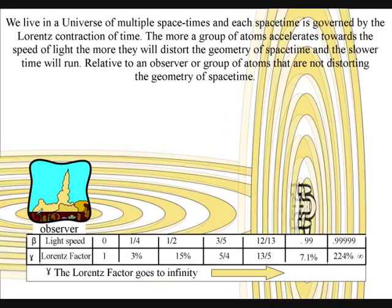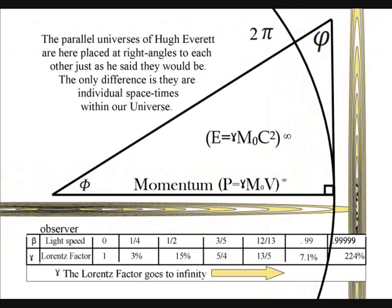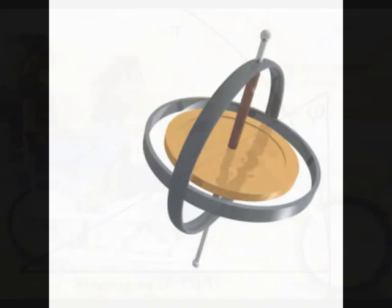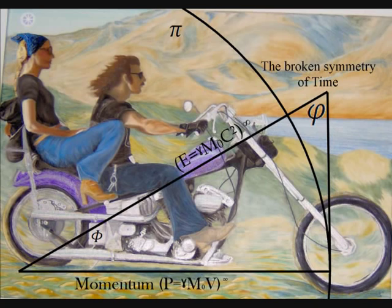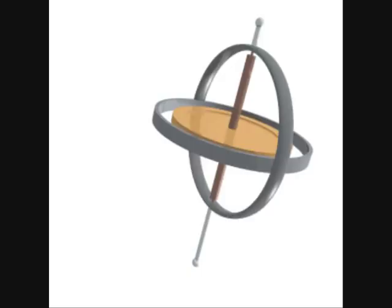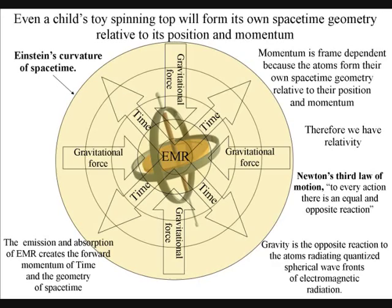The parallel universes of Hugh Everett are here placed at right angles to each other, just as he said they would be. The only difference is they are individual spacetimes within our one universe. Because of time dilation, these spacetimes are on every level of creation, from the Planck constant to clusters of galaxies.